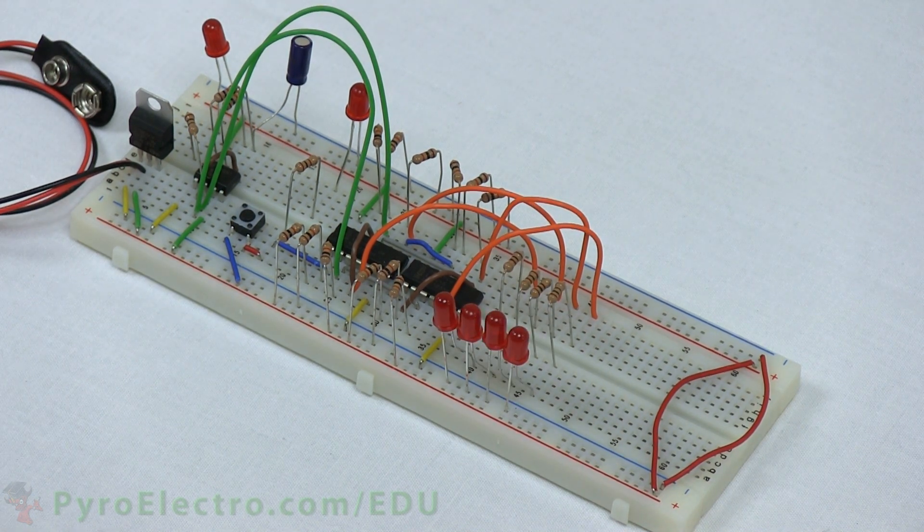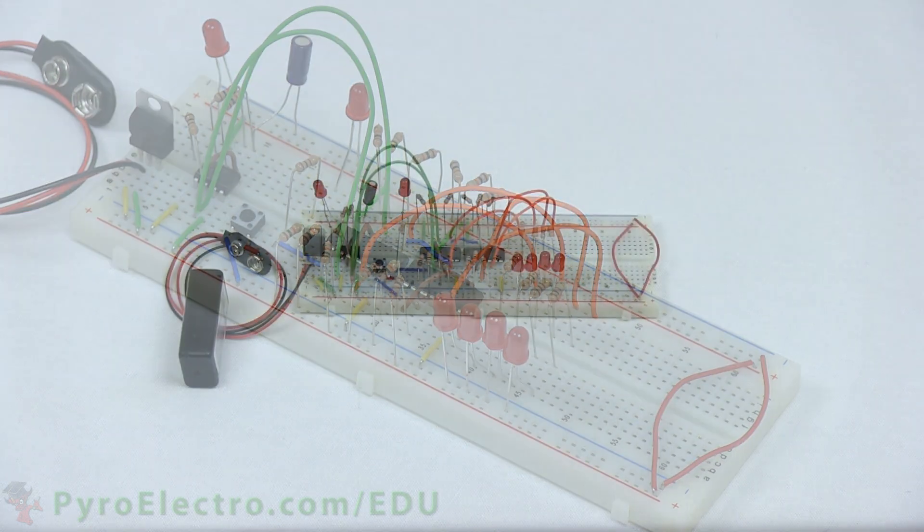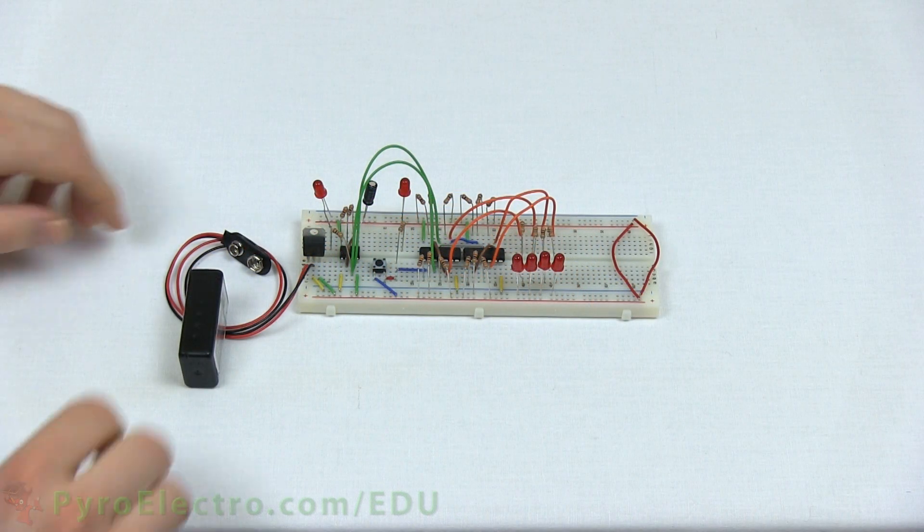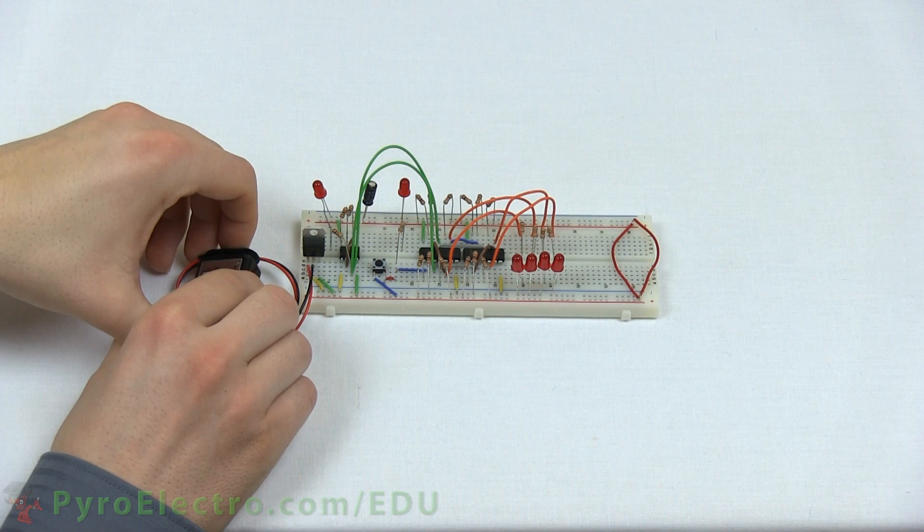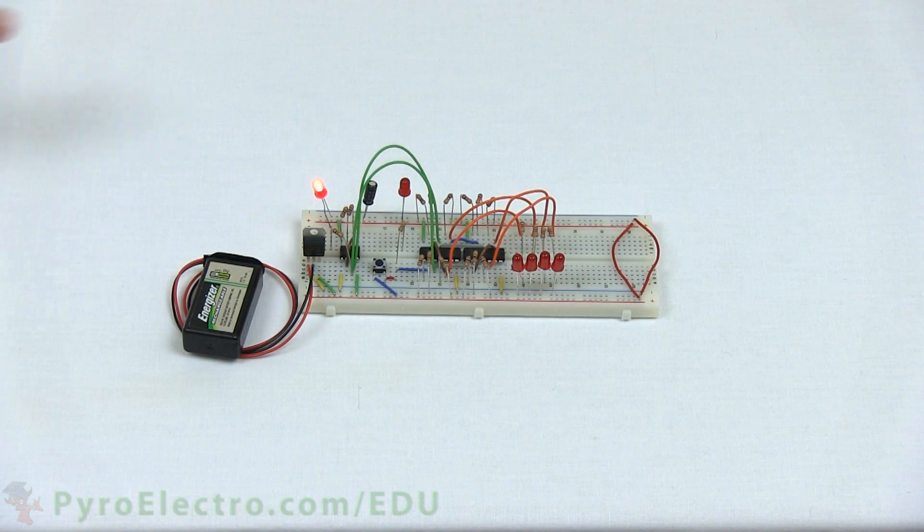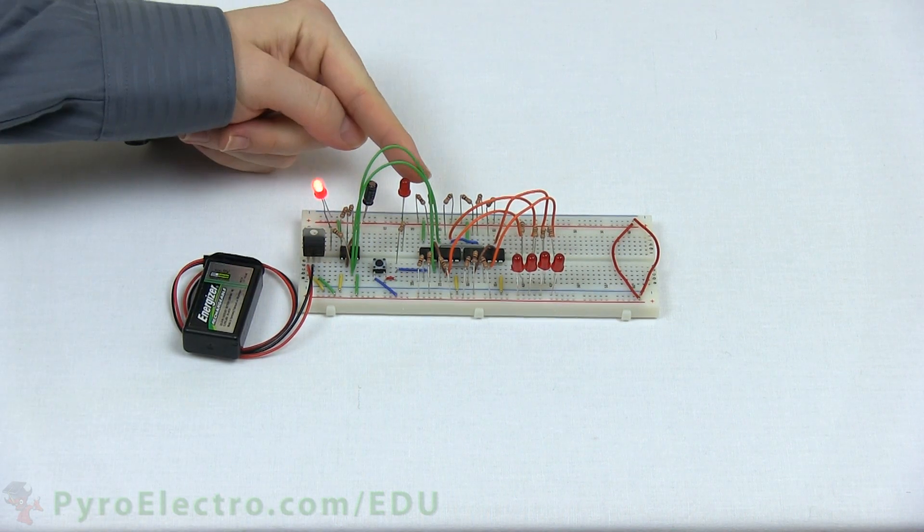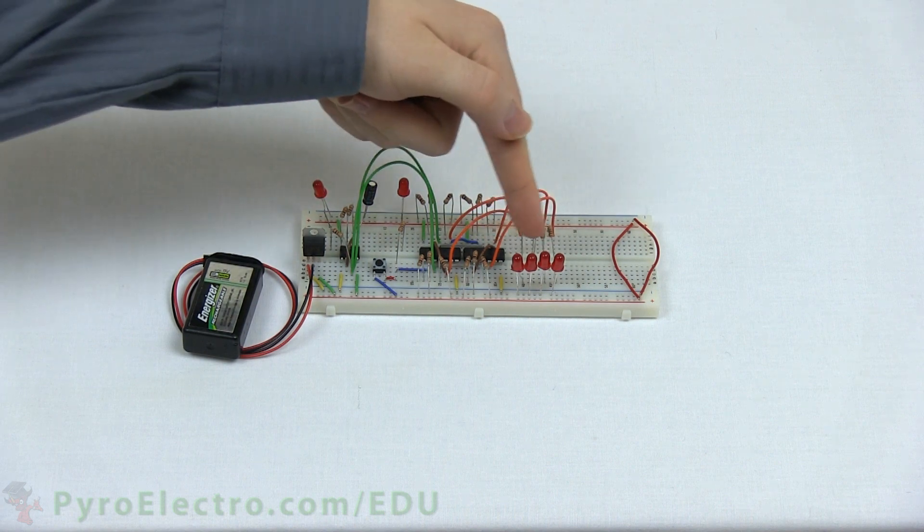With the circuit built up, now let's power up the system and see how it works. The 555 timer's output LED should blink back and forth, but none of the shift register LEDs should light up.